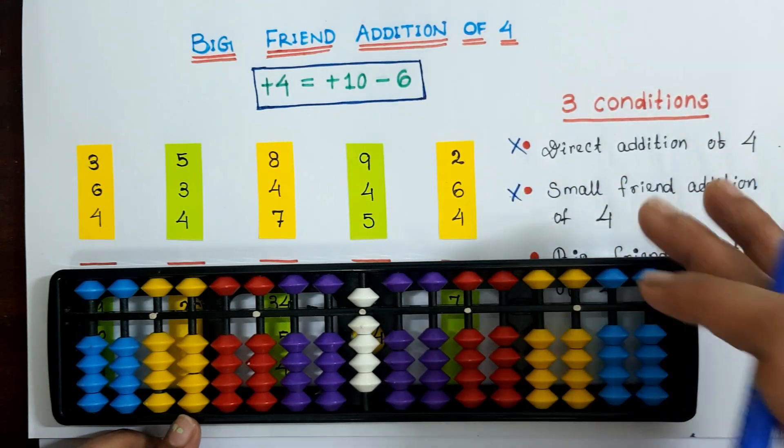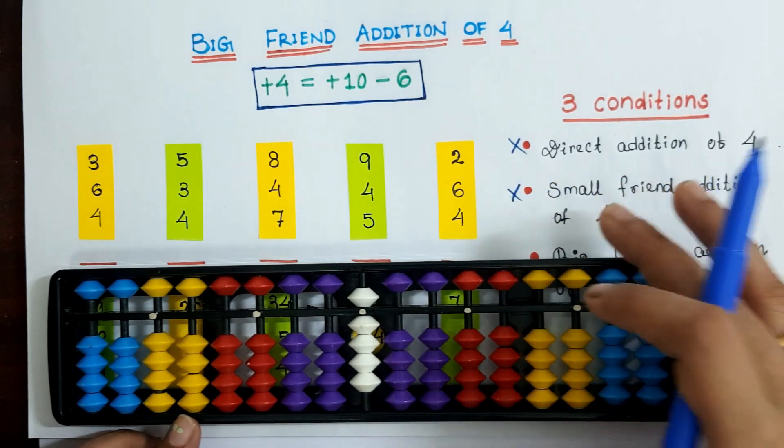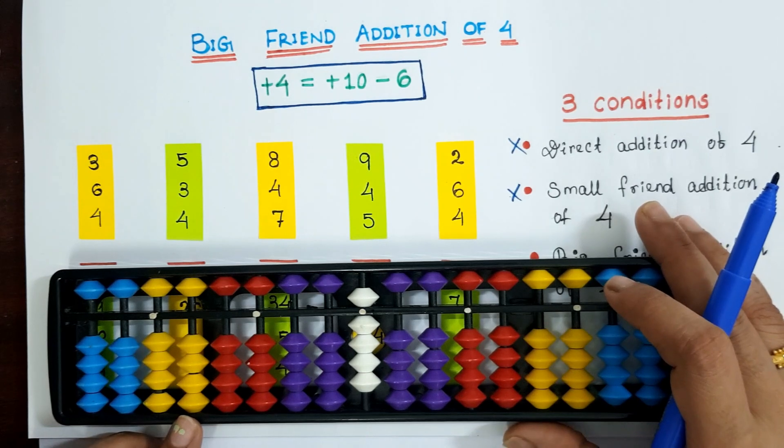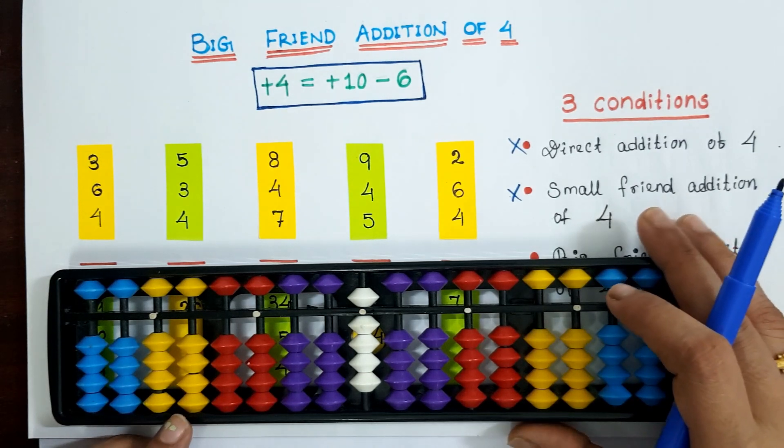In this case we have to apply big friend addition of 4.